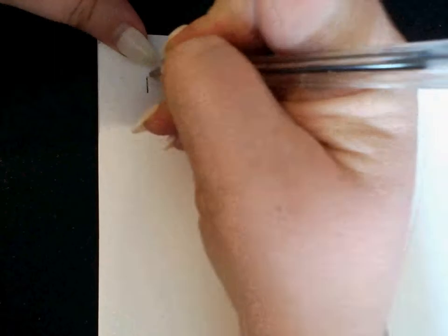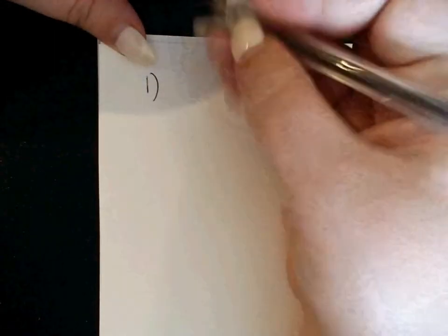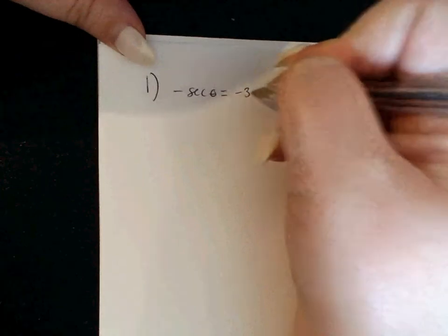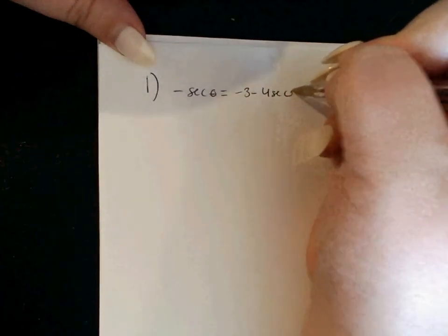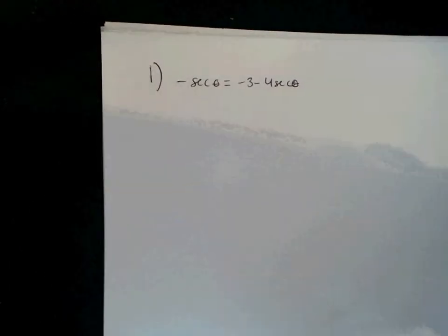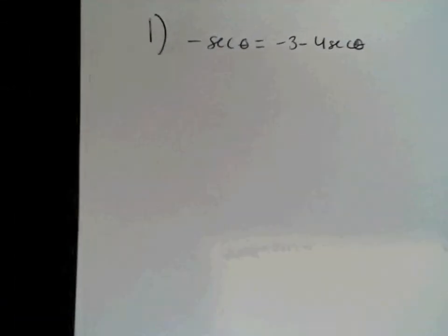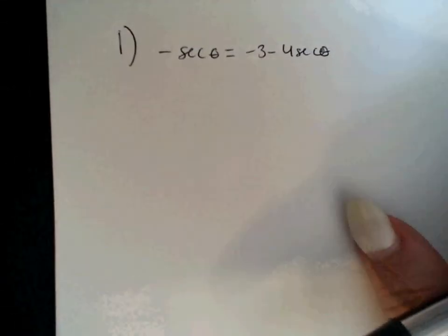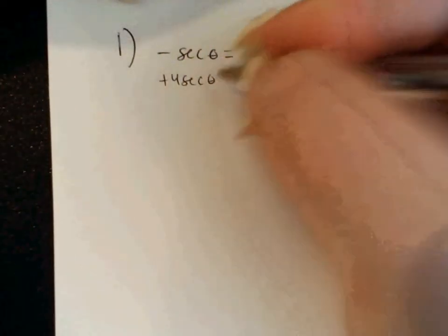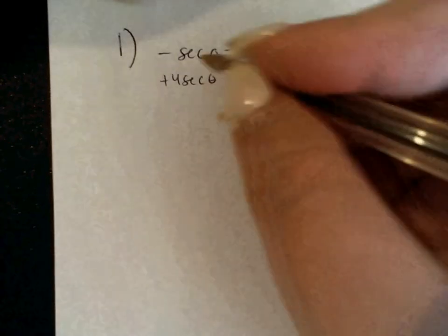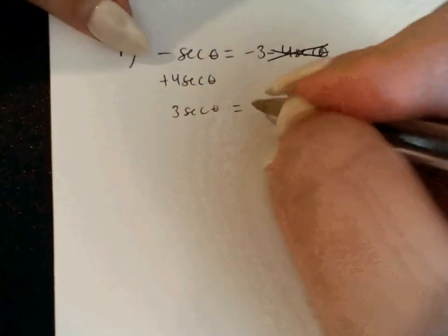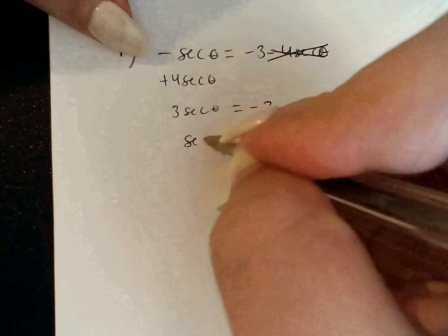Number 1 says to solve negative secant of theta equals negative 3 minus 4 secant of theta. We have the same function secant on both sides, so it would be nice to get them on the same side. I'm going to add the 4 secant theta over here, so plus 4 secant theta. That gives me 3 secant theta — because negative 1 plus 4 is 3 — equals negative 3. Or, secant of theta equals negative 1 if you divide by 3.